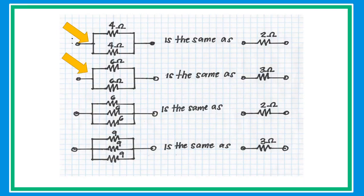If two resistors of the same value are connected in parallel, the equivalent resistance is simply half of that value. For example, two 4-ohm resistors give 2 ohms, and two 6-ohm resistors give 3 ohms.